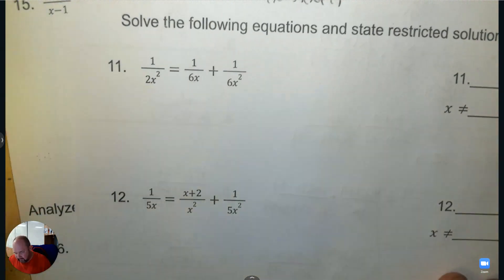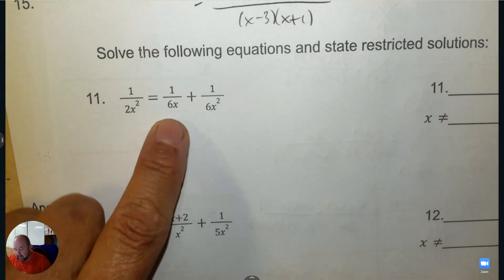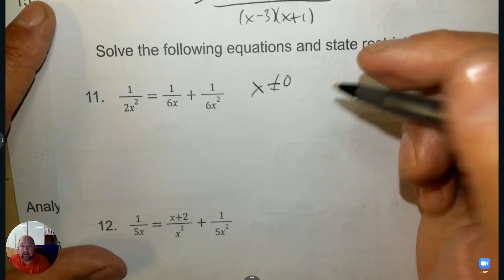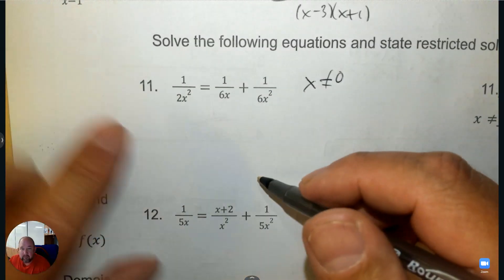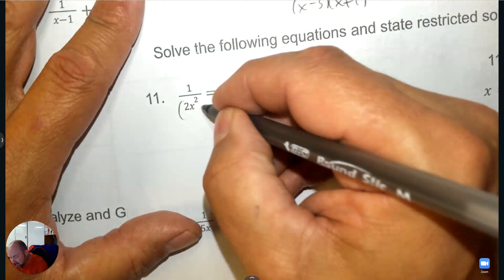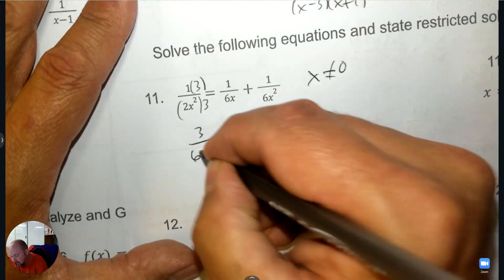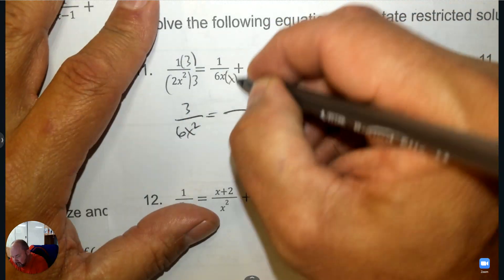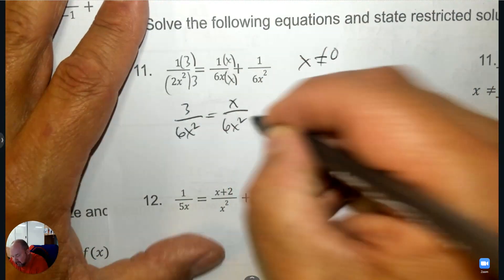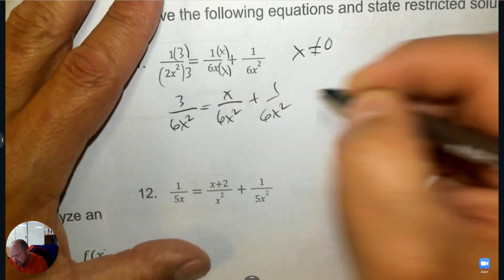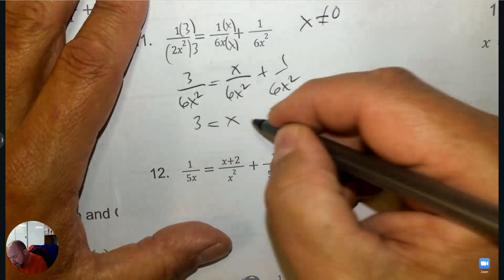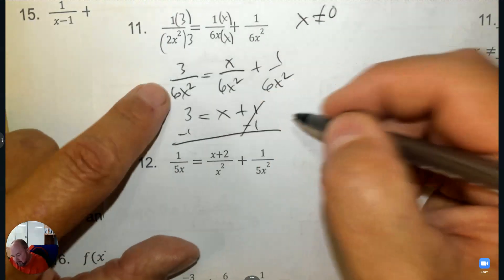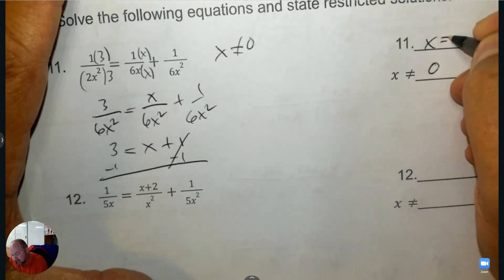Now we're going to solve equations. Write down what x cannot be — x cannot be 0 in the denominator, so the restriction is x ≠ 0. Then multiply to make all denominators the same. I see 2 with 6 and 6, so if I multiply by 3 I get 6x squared. The next one needs 6x squared, so I multiply by x to match. The last one already matches. Once that's done, write down the numerators and solve. Subtract 1 and you have your answer — 3 take away 1 is 2. So x cannot equal 0 and x equals 2.